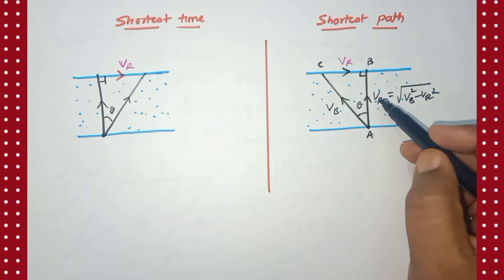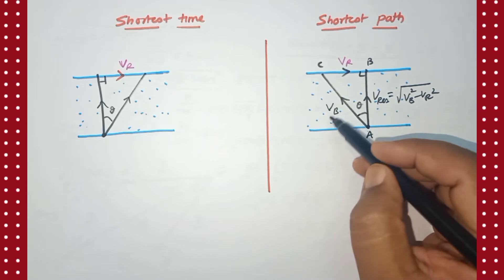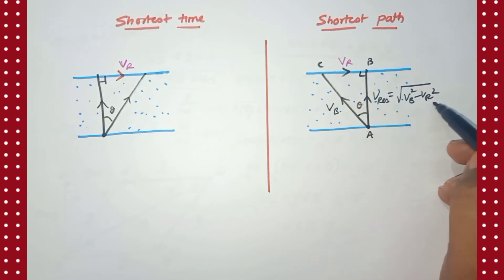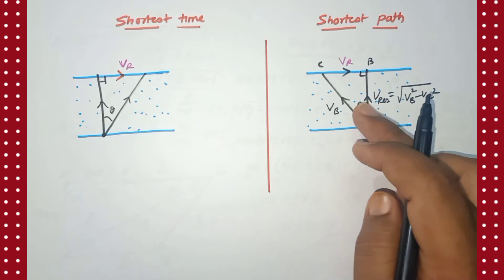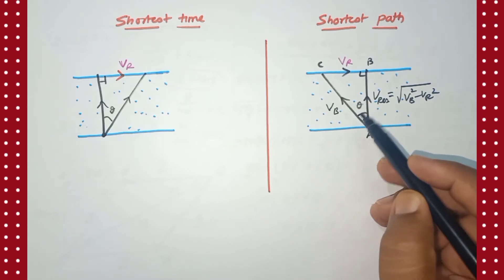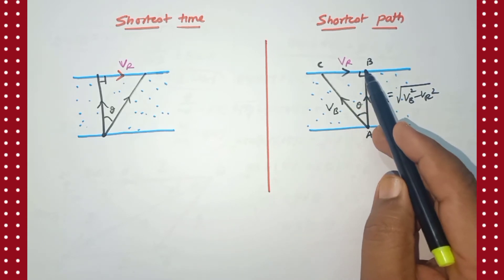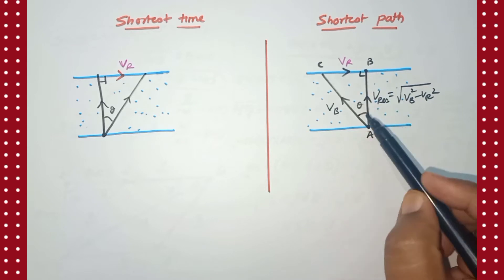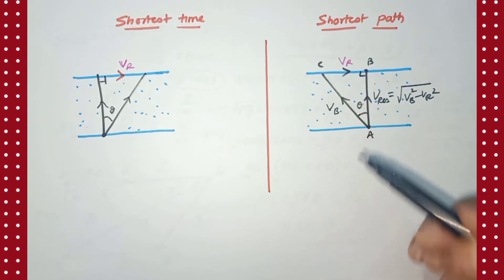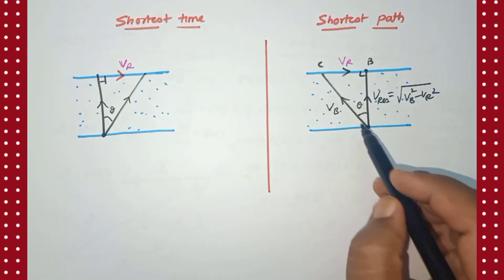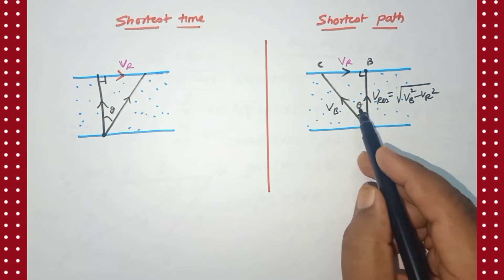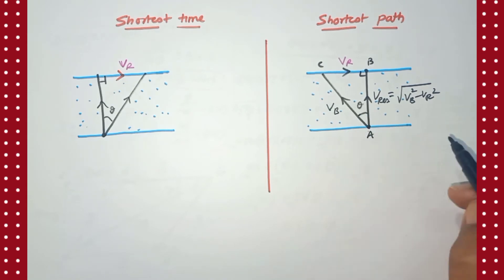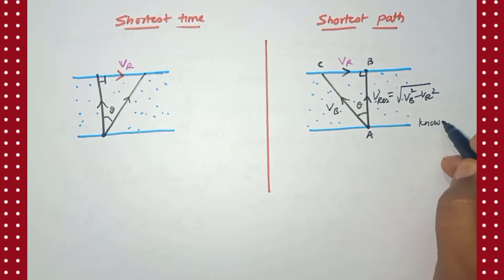So vb² = vr² + v_resultant², therefore v_resultant = √(vb² − vr²). We now have the resultant velocity. Next, we need to find the angle so that the boat will reach the opposite bank in the shortest possible path. The boat has to tilt in a certain direction with angle theta.